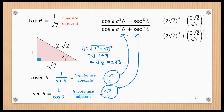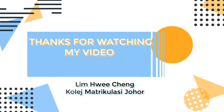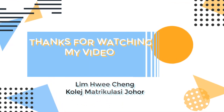We expand and evaluate, simplifying until we get 3 over 4.